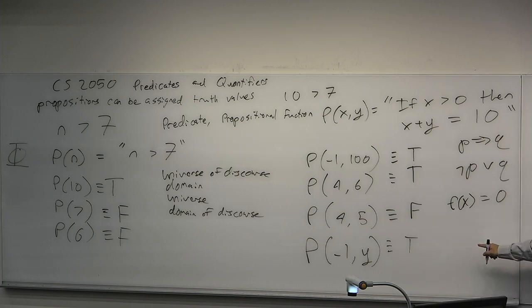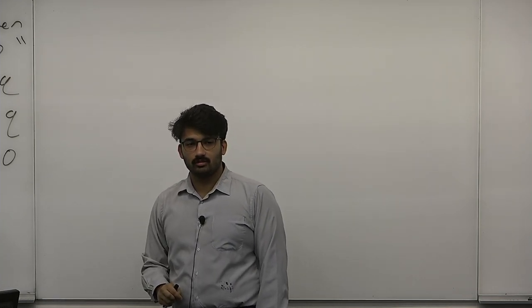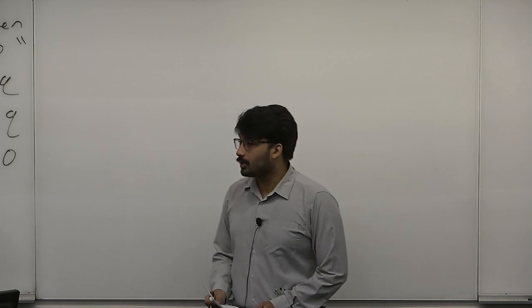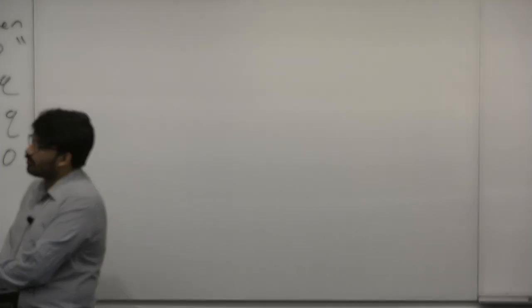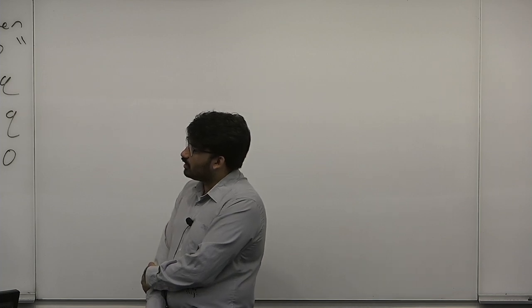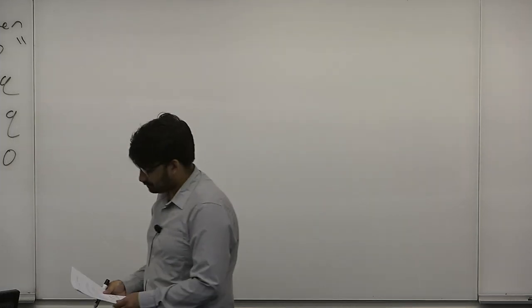Capital P is a predicate; lowercase p may be a proposition or propositional variable — an atomic element. Sometimes we call it a propositional function. Predicate and propositional function are definitions for the same thing — predicate just sounds cooler. In math we have to use as much wizard-like language as possible. That's literally the only reason I prefer 'universe of discourse' over 'domain,' even though domain makes more sense in the context of a function's domain and range.